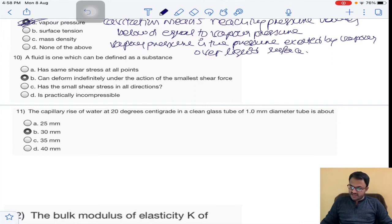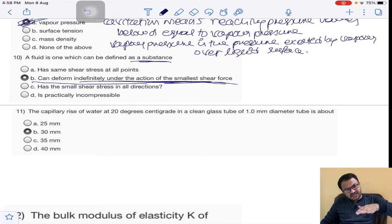A fluid is one which can be defined as a substance. Obviously a fluid is a substance that will deform continuously even for the smallest shear stress. This is the basic definition of fluid. Solids will never deform for smallest shear stress - they require certain minimum shear stress to deform. But fluids can be deformed indefinitely under action of smallest shear force. That is when shear force is acting parallel to the surface, these fluids will deform. Answer is B.